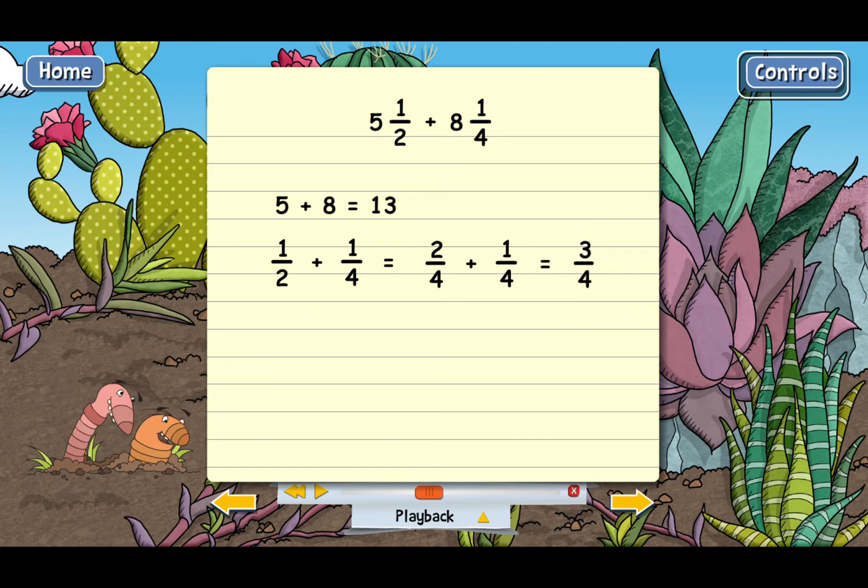Good. The whole number parts added to 13, remember. And then the fraction parts added to three fourths. The last step in adding these two mixed numbers is to just put the whole number and fraction answer together to make a new mixed number, 13 and three fourths. And that's the answer to the problem.